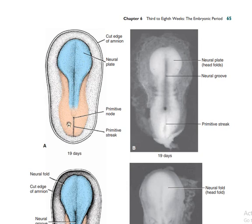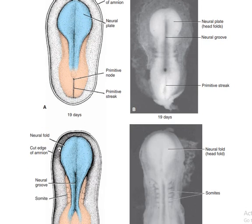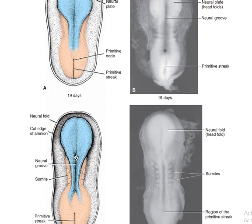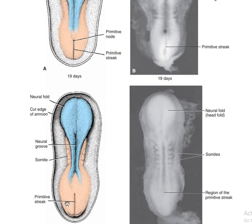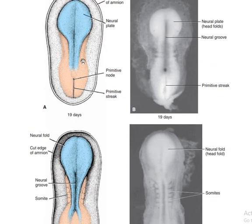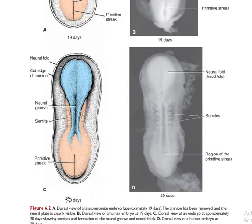The mesoderm migrates to form the somites at the back. The upper portion is differentiated into the neural plate, which forms two neural folds. These two neural folds come together to form a neural groove. By day 19 there are no somites yet, but by day 20 a low number of somites are already present.